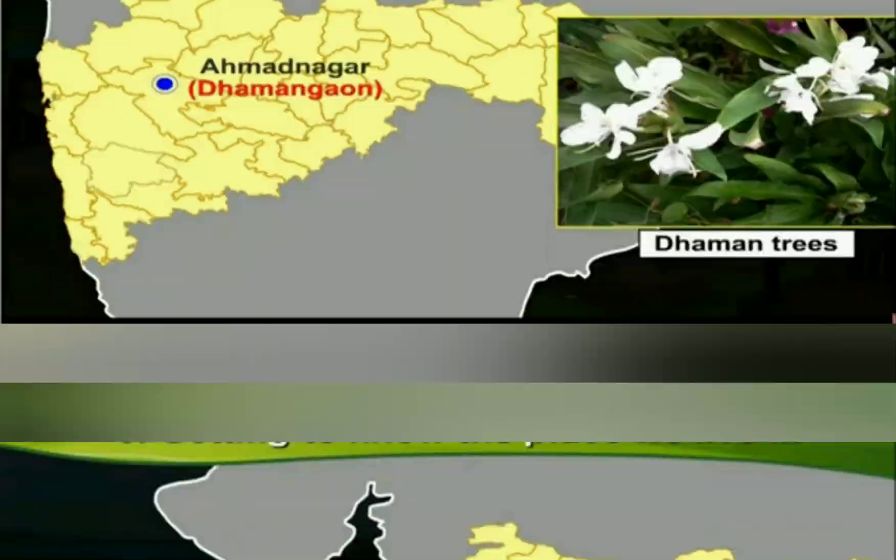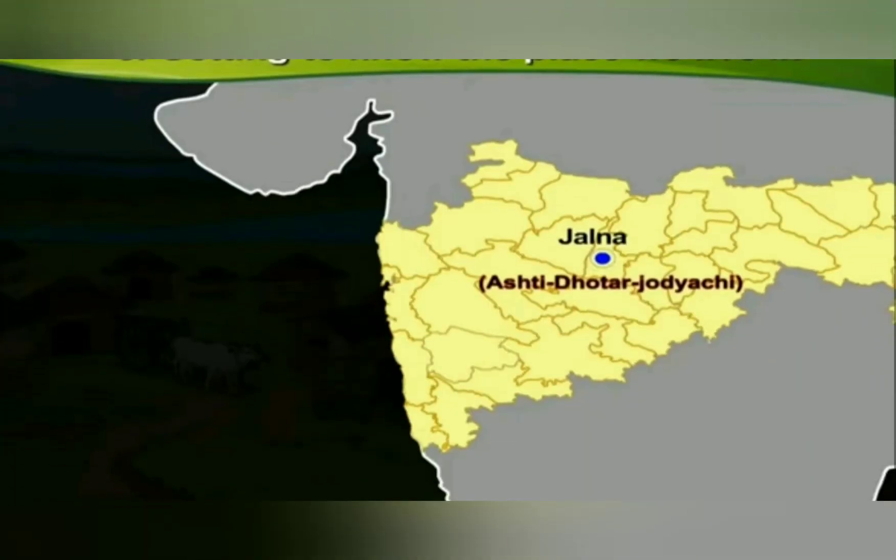There is another place: Ashti Dhotar Zodachi. It is in Partur Taluka of Jalana district. Why did this particular place get the name Ashti Dhotar Zodachi? Because fine Dhotar Zodis — Dhotar everyone knows — of excellent quality were made there. And because of that, this place also got the name Ashti Dhotar Zodachi.